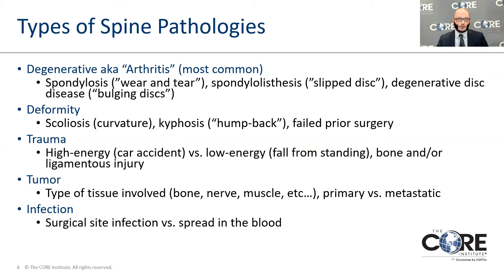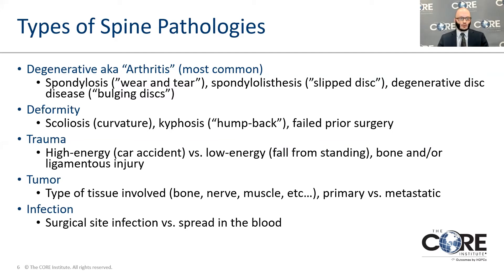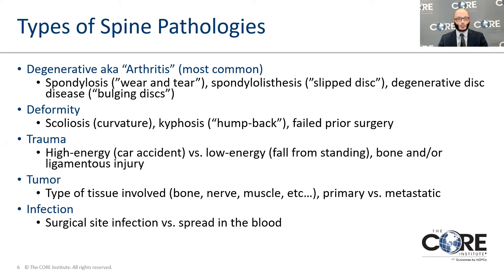That's different from a disc herniation, where part of the jelly on the inside actually squirts out. Degenerative conditions are the most common issues I see, but they can develop into deformities — curvatures or abnormal alignments of the spine. Scoliosis is an abnormal curvature when you're looking at somebody straight on. Kyphosis refers to a humpback deformity. Deformities can happen because of failed prior surgery or degeneration around prior surgeries.